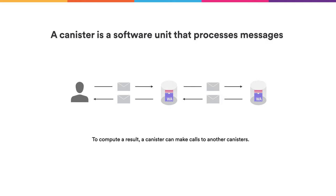A canister can also call out to other canisters during its execution, so you can use another canister as a library or subsystem. In order to process a message sent from a user, the canister would send a message to another canister and get the reply back, which it would then use to process its message.